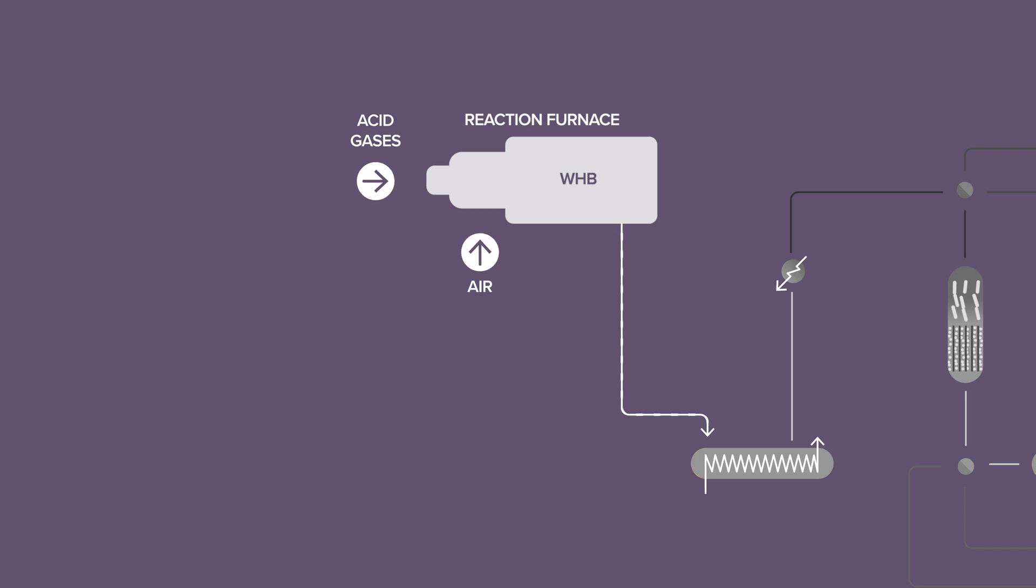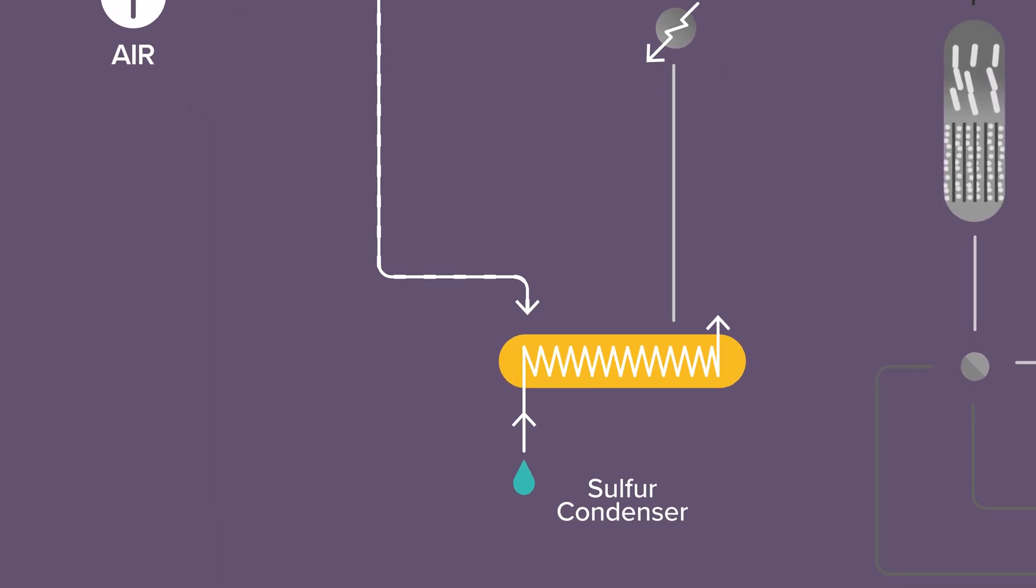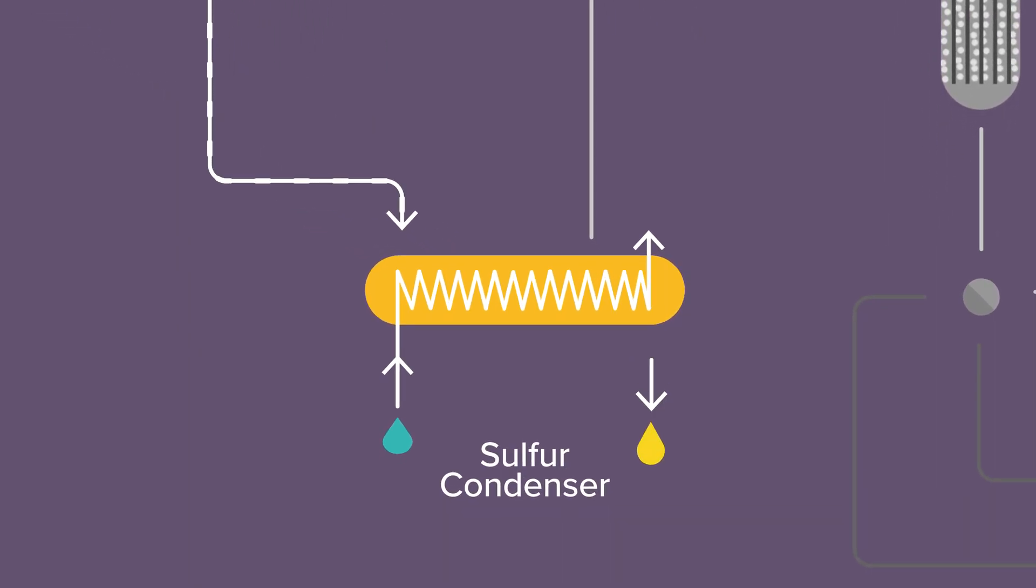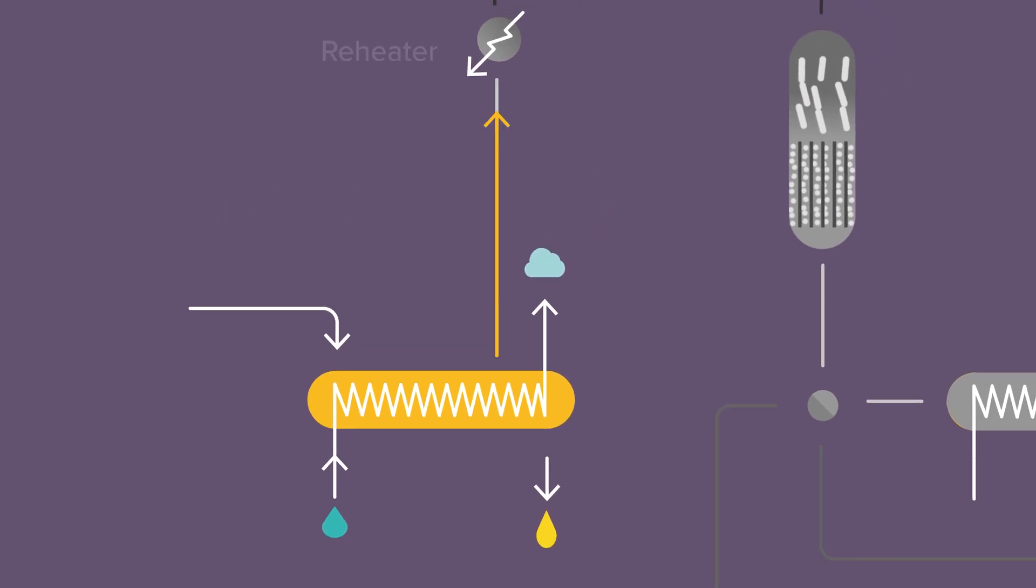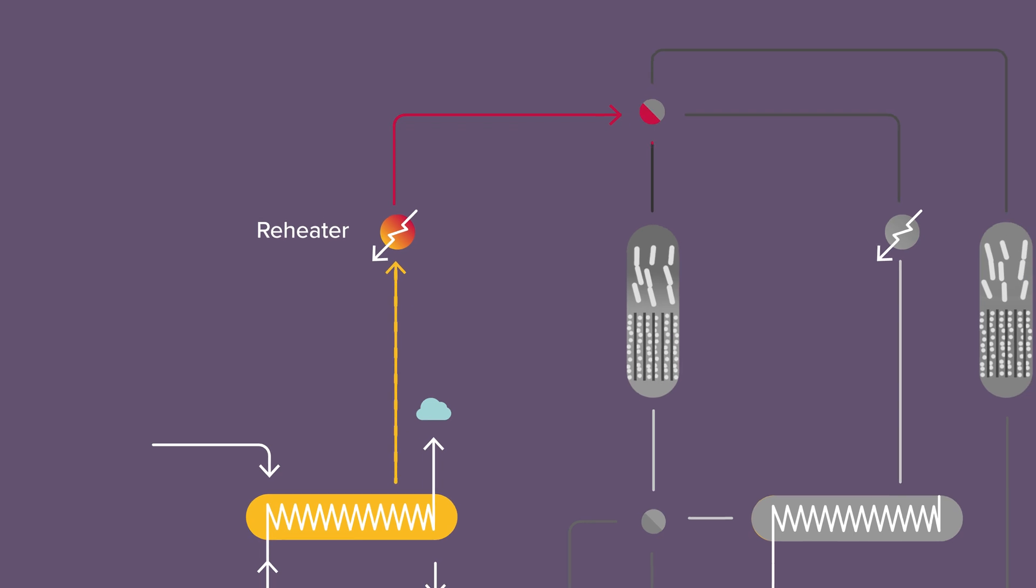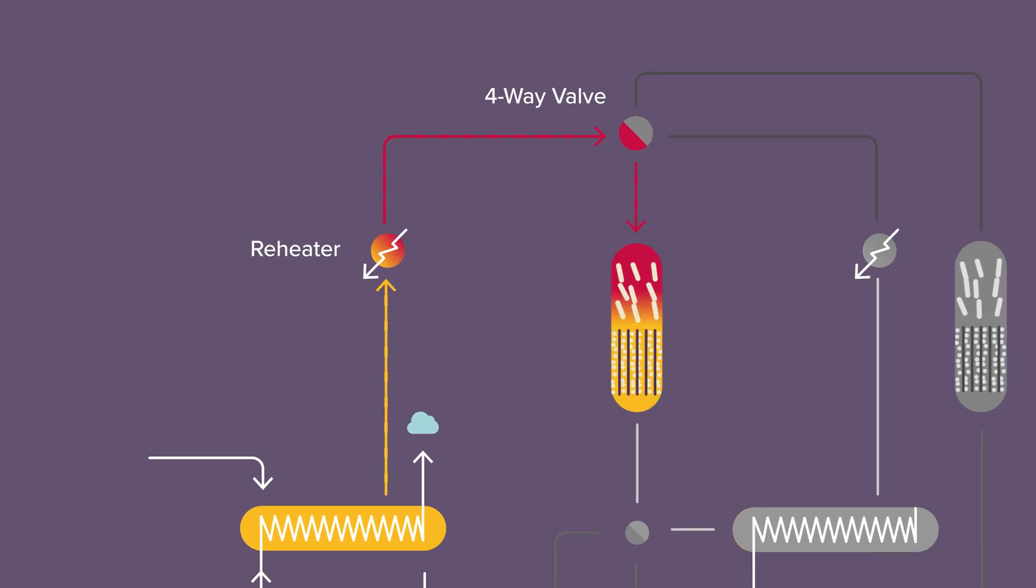The process gas from the waste heat boiler is cooled down in the first sulfur condenser, where sulfur is condensed and steam produced. Then the process gas is reheated prior to entering the hot mode reactor via the four-way valve.